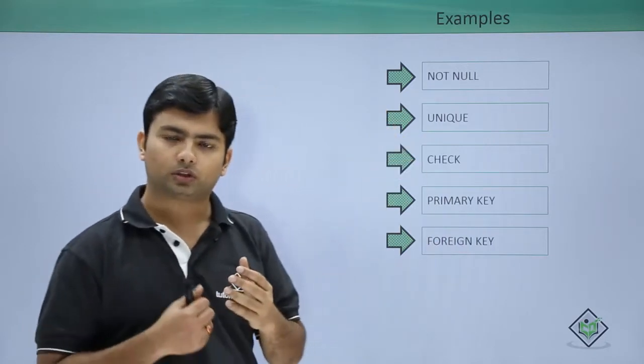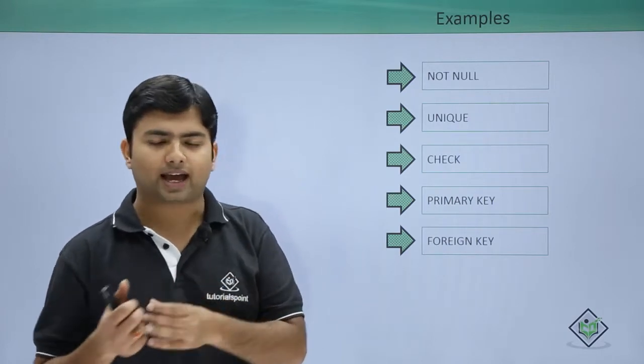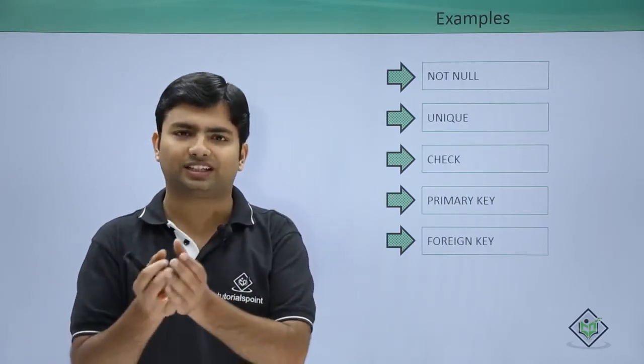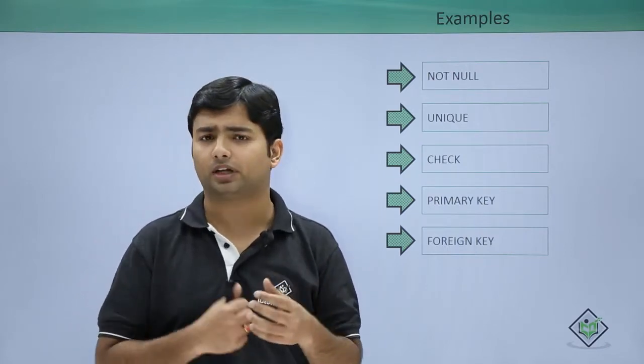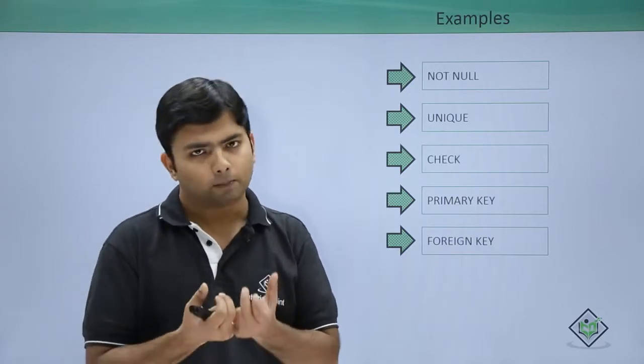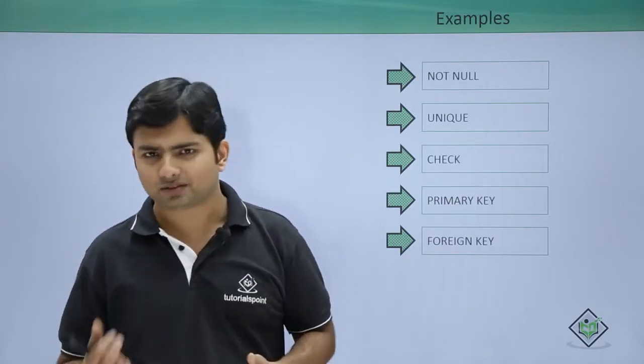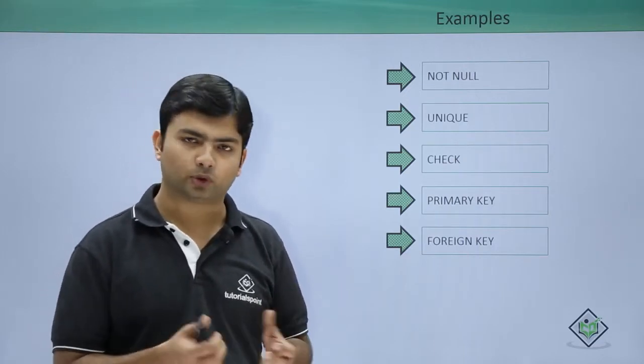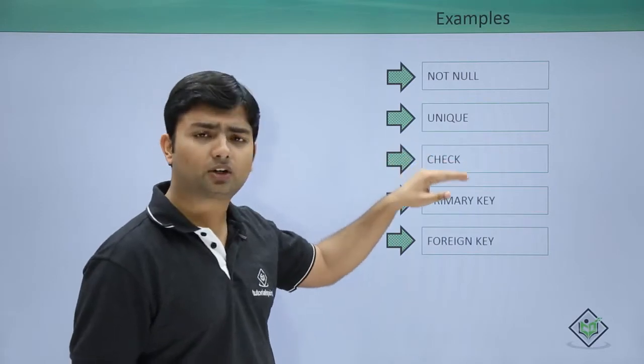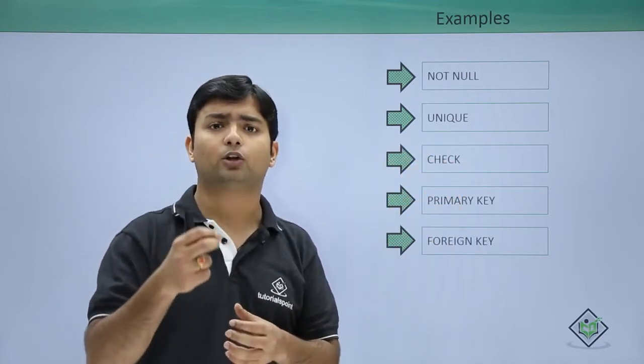For example, I have a column called gender and I'm accepting a single character, so I will expect M or F as the logical inputs. But if we start entering A, B, C, D in the gender column, that will be of no use. So what we can do is we can actually add a CHECK constraint which will ensure that a particular type of value which we are looking for is only getting accepted.